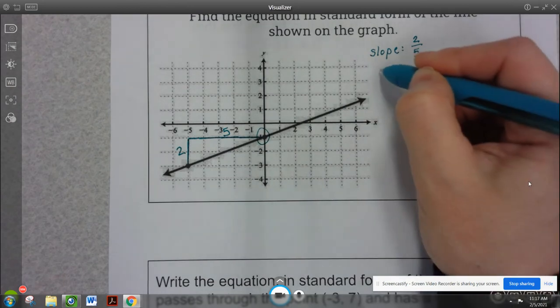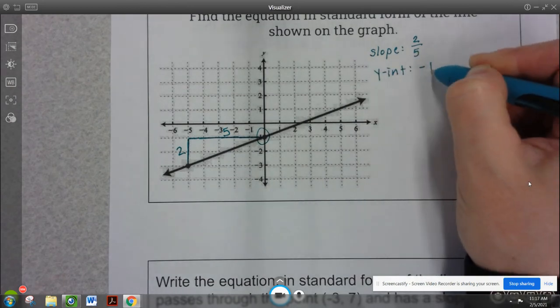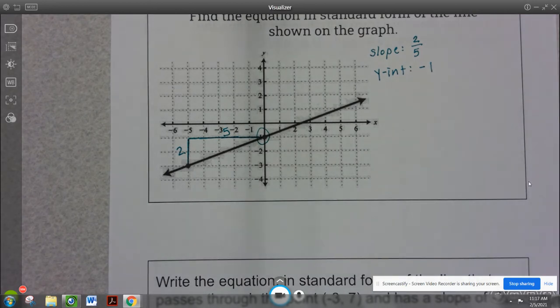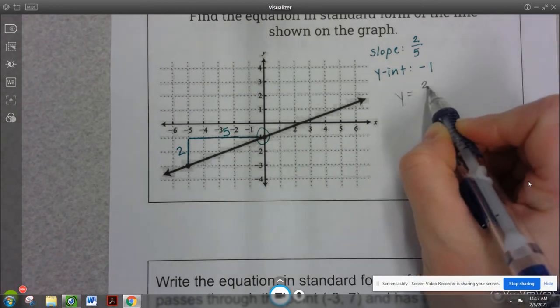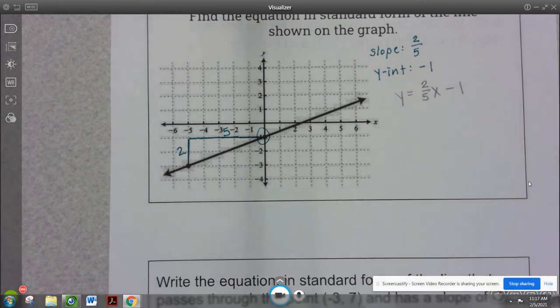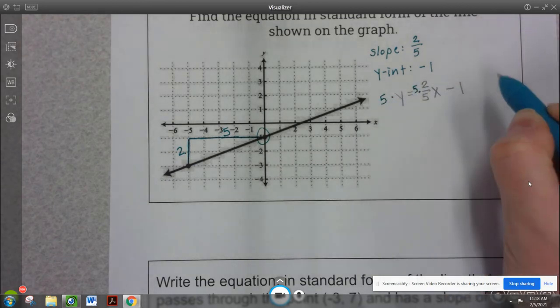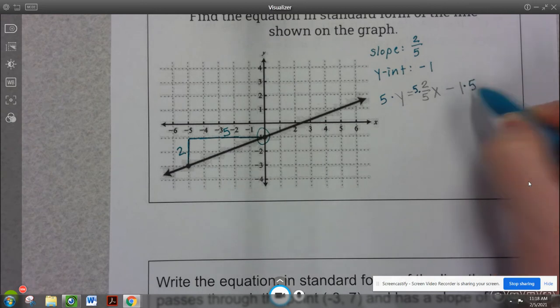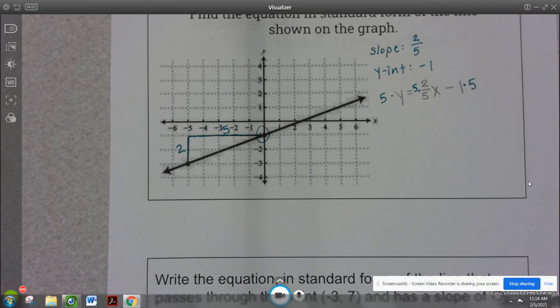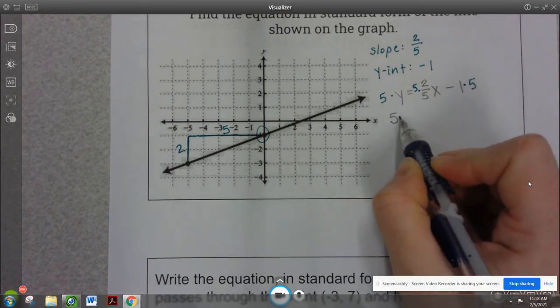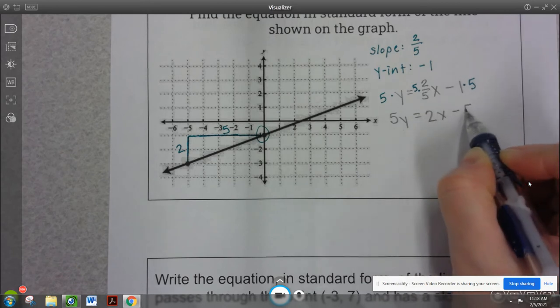Another thing I noticed is I have my y-intercept. So I'm going to write slope-intercept form in this case because I have the slope and I have the y-intercept. So I'm going to make my life a little easier. So that would be y equals 2 fifths x minus 1. So I have a fraction. I'm not allowed to have a fraction as a coefficient in front of x. So what I can do is I'm going to multiply by 5. But remember, I have to multiply everybody by 5, which means I also have to multiply my constant by 5.